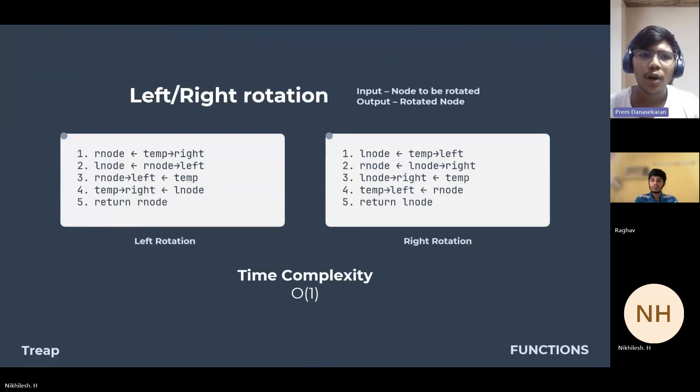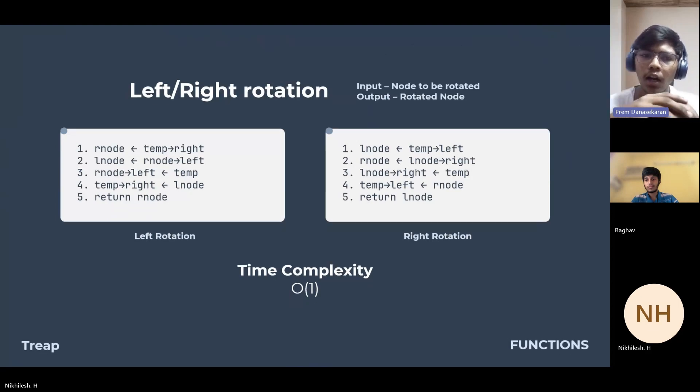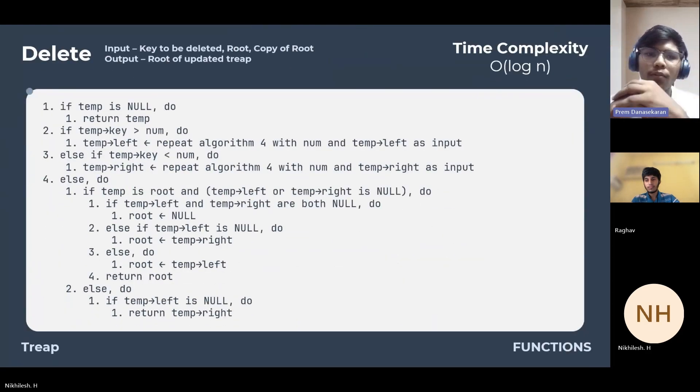Left or right rotations are pivotal for maintaining the balance within the Treap data structure to take care of the heap property. These operations pivot a specified node either to the left or right respectively, taking the address of the node as input. This operation has a time complexity of O(1).